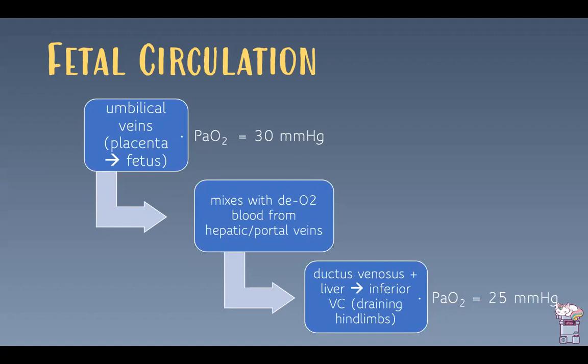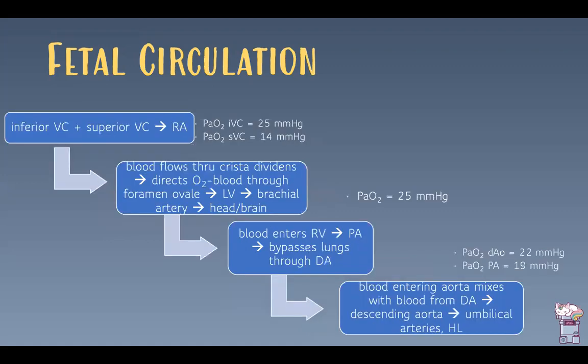Blood from the umbilical veins mixes with deoxygenated blood from the hepatic and portal veins, flows through the ductus venosus and liver, and drains into the inferior vena cava, which also drains blood from the hind limbs. The PaO2 of this blood is about 25 mmHg. The inferior and superior vena cavae both drain into the right atrium, where the partial pressure of oxygen is between 14 and 25 mmHg.